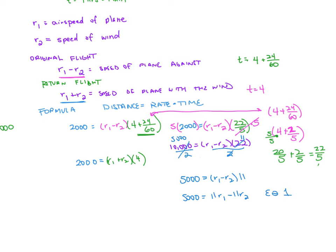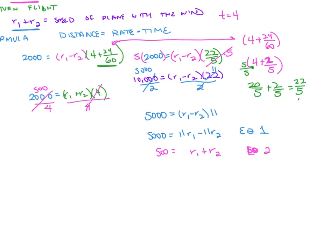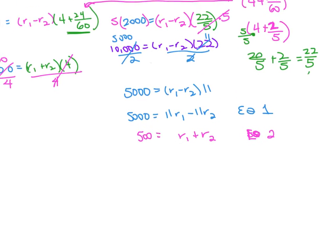Equation 2 is simpler: 2,000 equals (R1 plus R2) times 4. Dividing both sides by 4 gives us 500 equals R1 plus R2. Now we can solve the system — we're looking for R1, the speed of the plane, and R2, the speed of the wind.